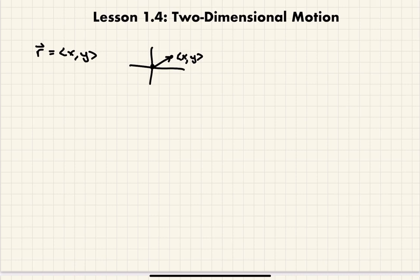For displacement, that is the change in position, so it's going to be (Δx, Δy), or (x_final − x_initial, y_final − y_initial). You're going to have to subtract two different position vectors to get the displacement vector.